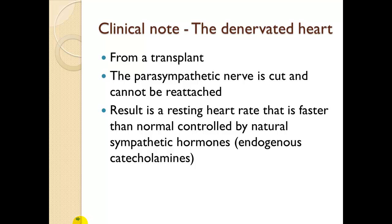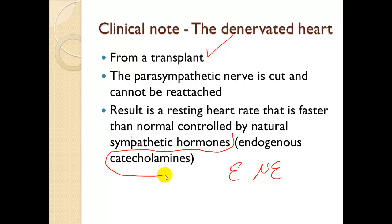A denervated heart occurs after a heart transplant. The parasympathetic nerve is cut and cannot be reattached, resulting in a resting heart rate faster than normal, controlled instead by natural sympathetic hormones — endogenous catecholamines, also called epinephrine, norepinephrine, or adrenergic hormones.